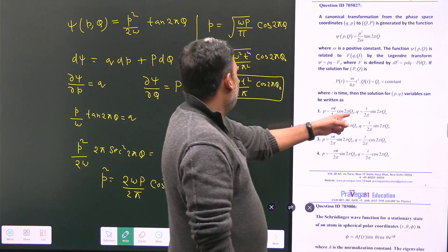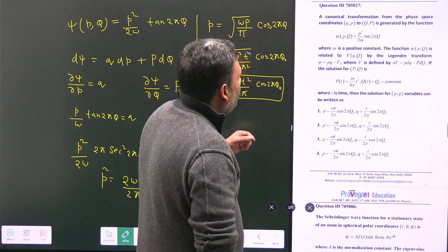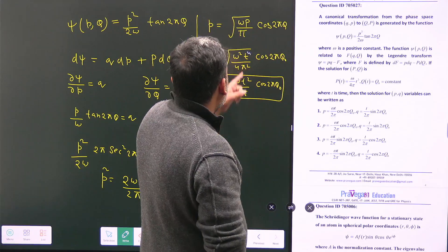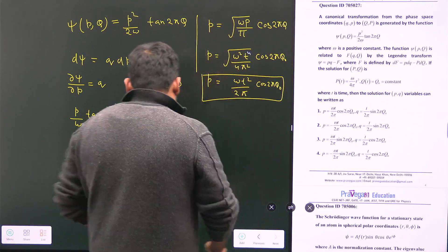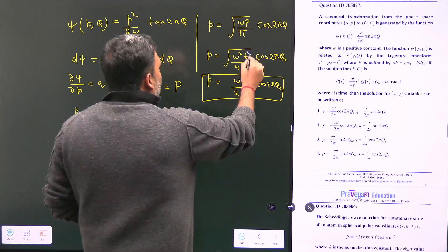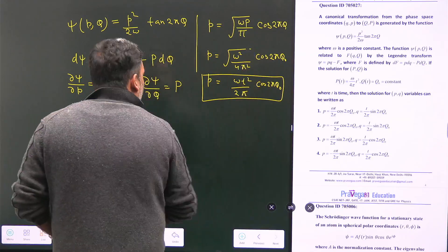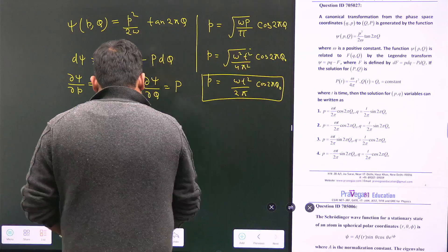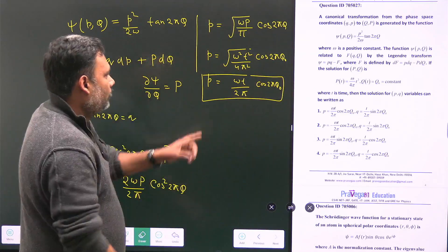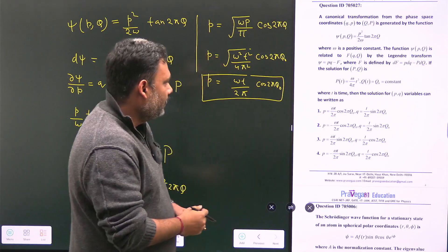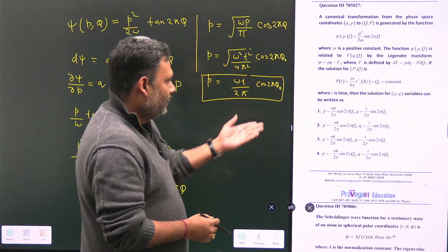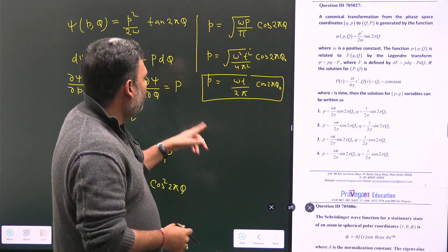After careful substitution, the result simplifies to p(t) proportional to t². Comparing with the given options, option number one is correct. We can also verify by finding q from the first partial derivative relation.